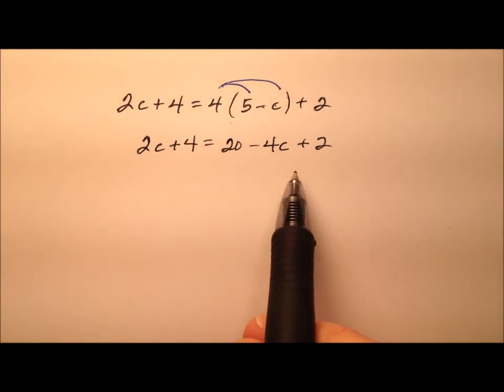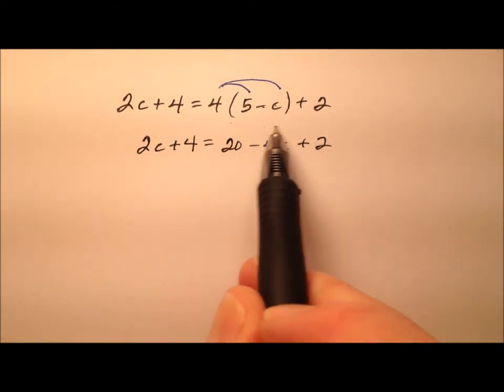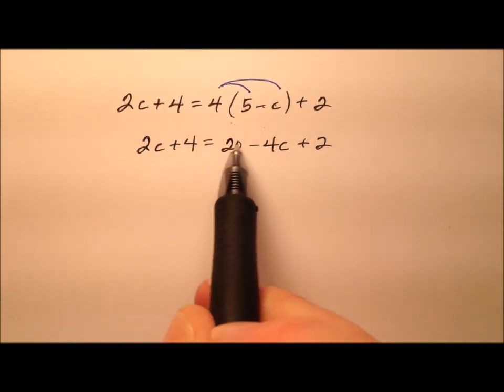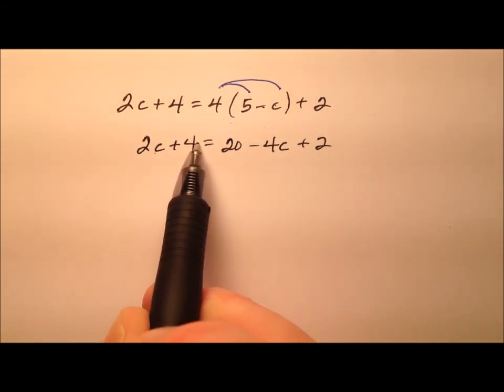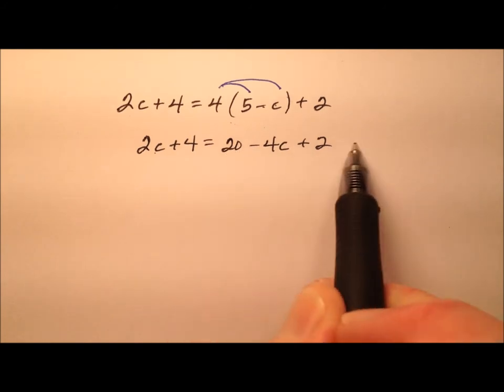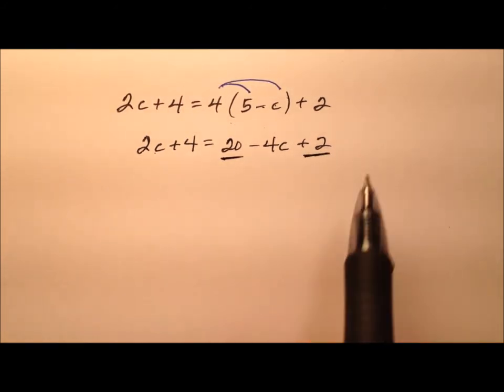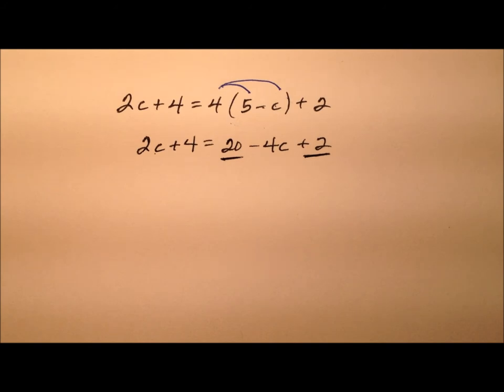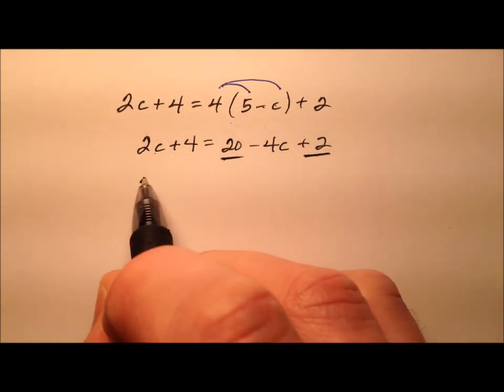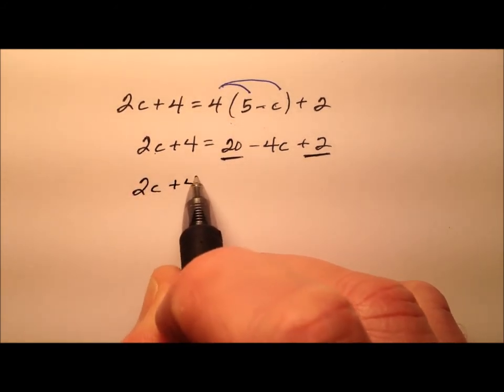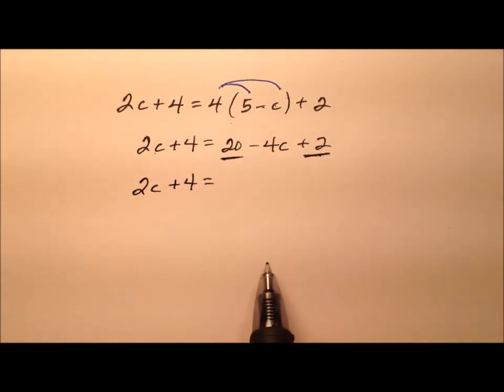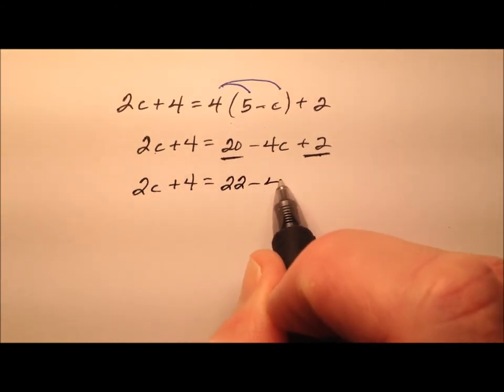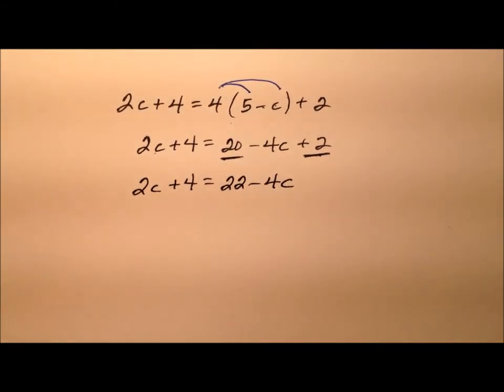So the next thing that needs to happen is that we need to combine any like terms on this side. Well, this side's already simplified. We have a variable and we have a constant, so he's as simple as he gets. But this side, we have this 20 and this positive 2 that are like terms. So before continuing and trying to use any of my properties of equality, let's go ahead and combine these like terms. So 20 plus 2 is, well, 22. So we'll say 22 minus 4c.